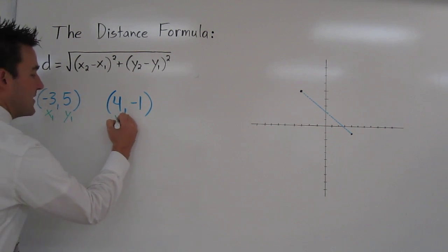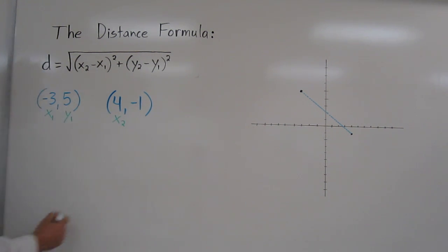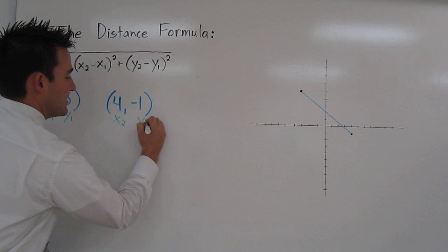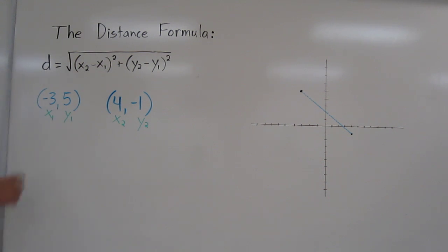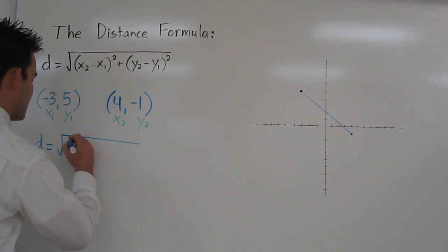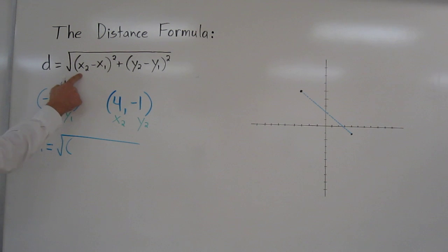Over here, we have the x-coordinate of the second point and the y-coordinate of the second point. So now all we have to do is plug in x₁ where x₁ appears, y₁ where y₁ appears, and the other numbers where they appear. So our distance is going to equal x₂ is 4 minus x₁.